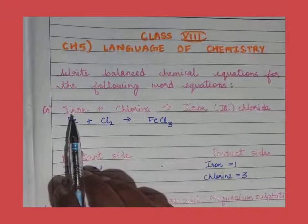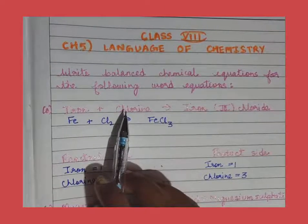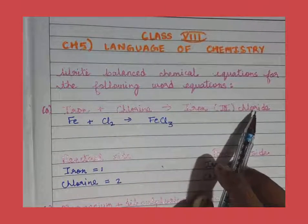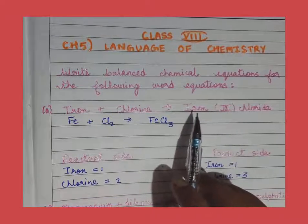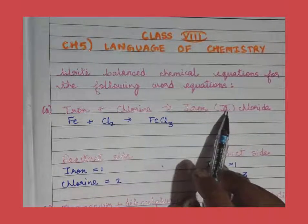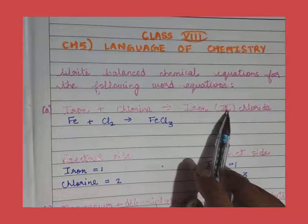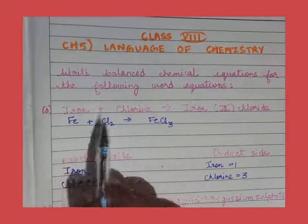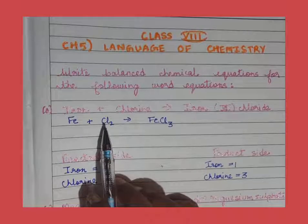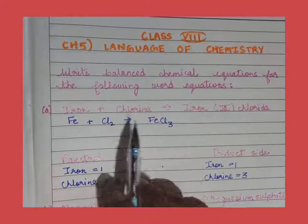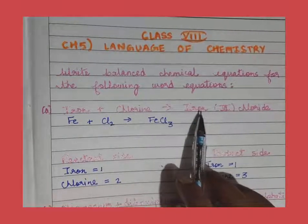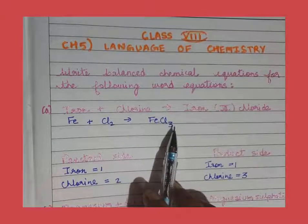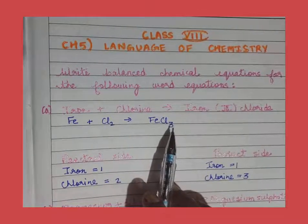So this is the word equation: iron combines with chlorine to give iron 3 chloride. Now let me remind you that iron has two variable valencies, 2 and 3. The Roman numeral 3 indicates that its valency is 3. The symbol of iron is Fe, the formula of chlorine is Cl₂, and the formula for iron 3 chloride is FeCl₃, as when elements combine they interchange their valencies.